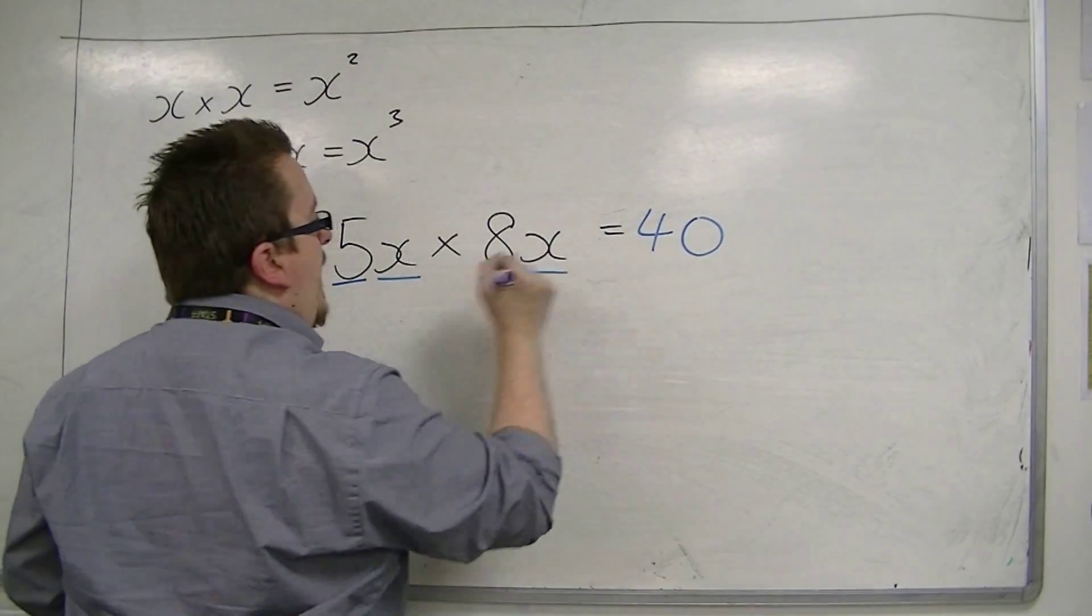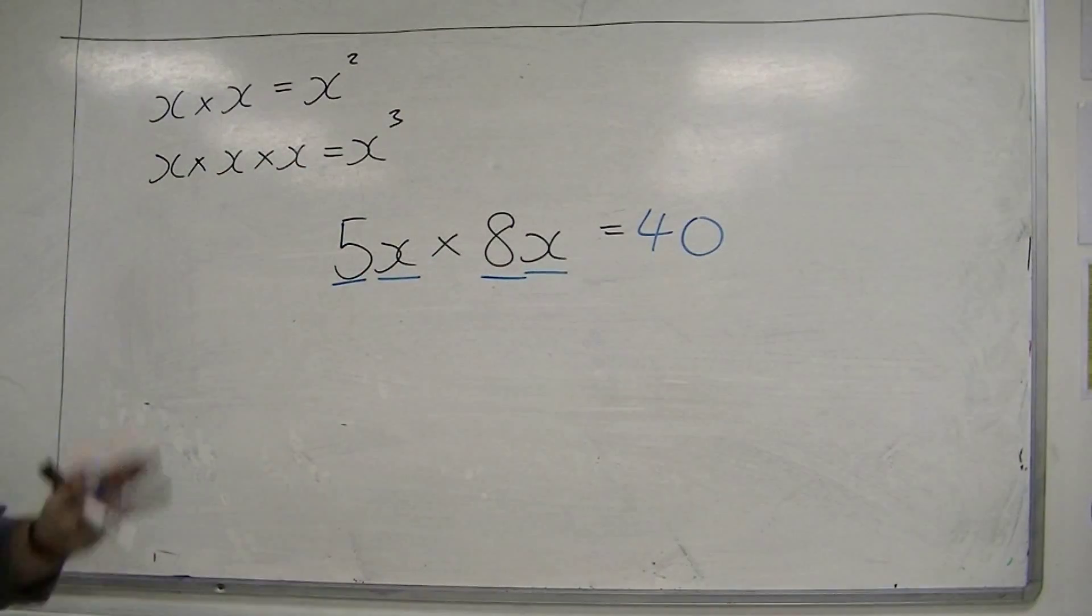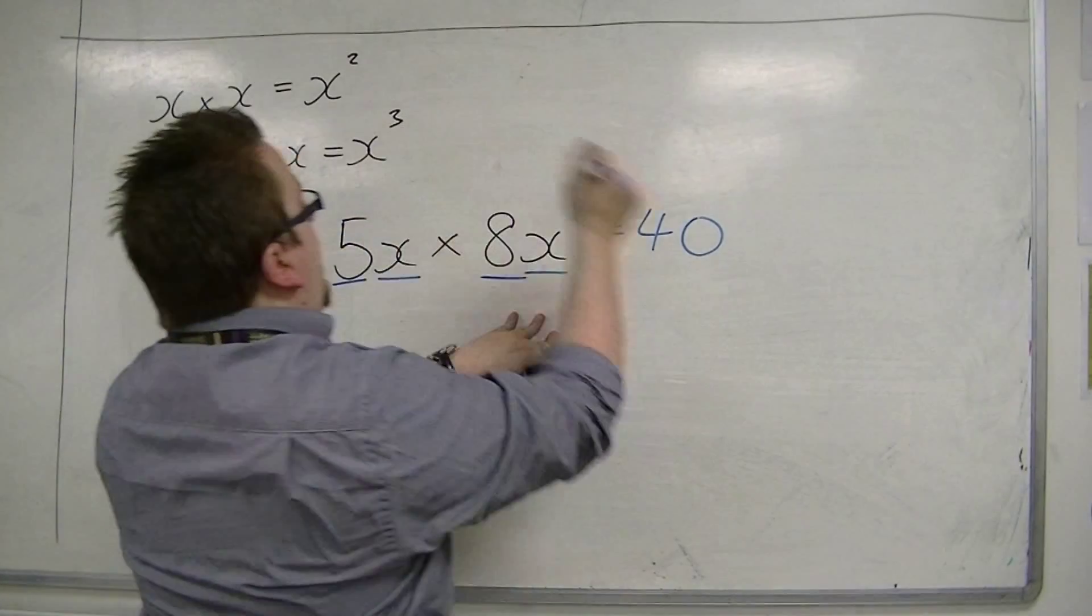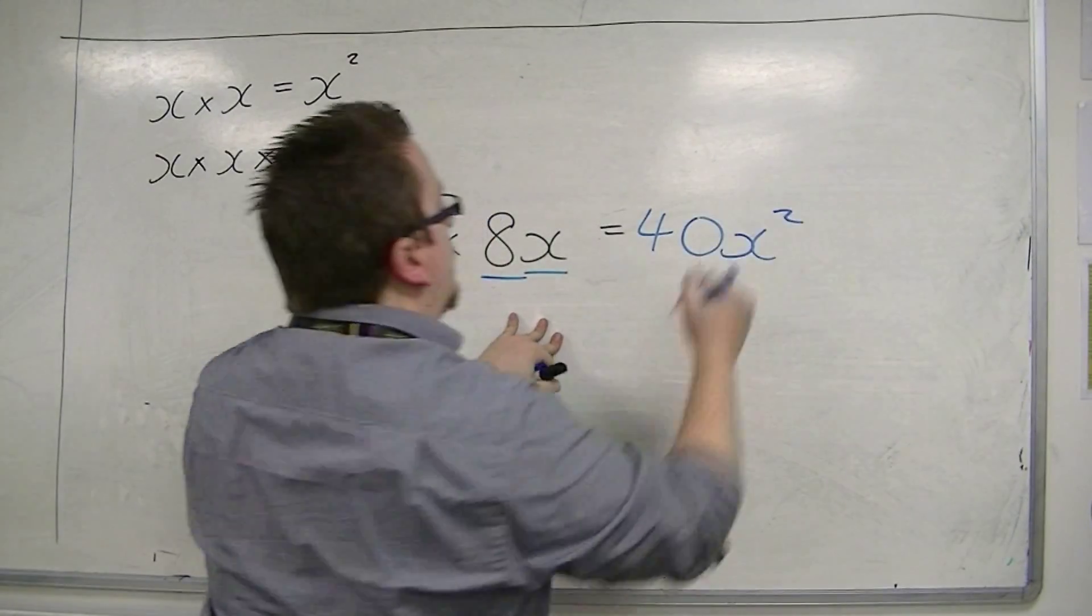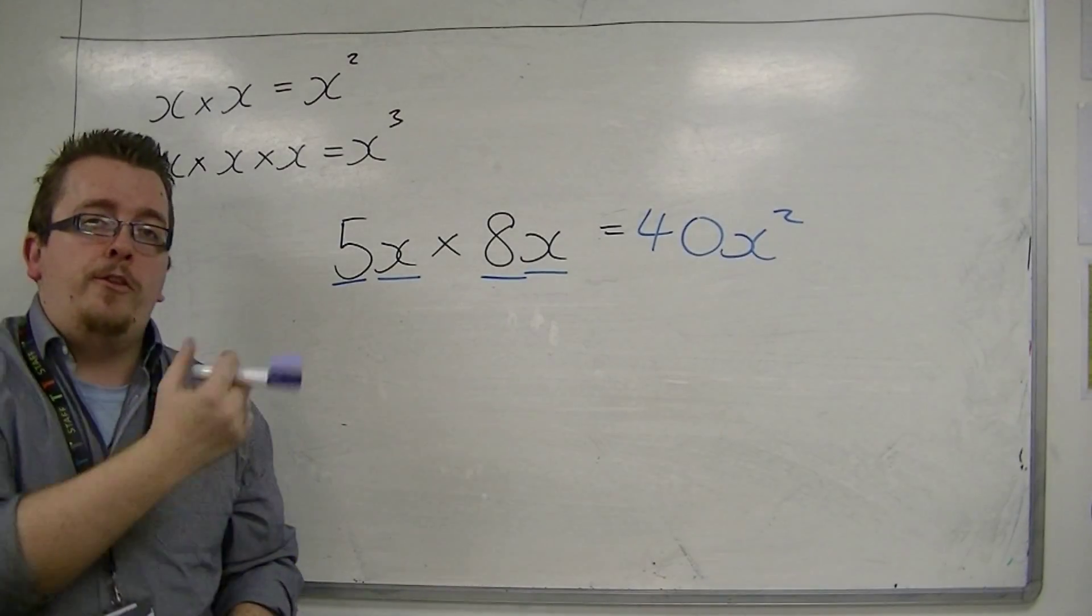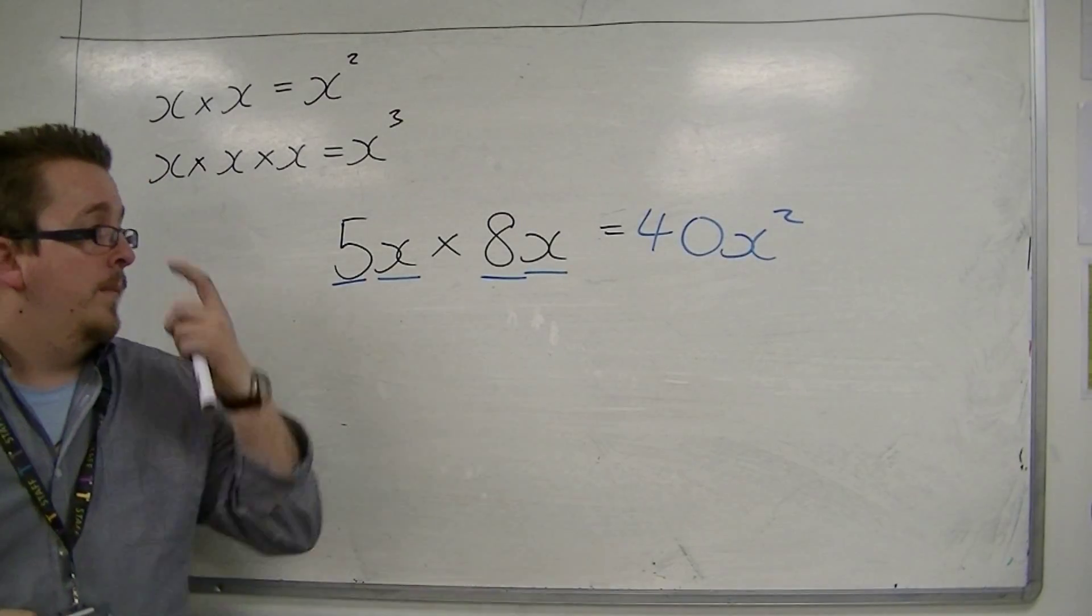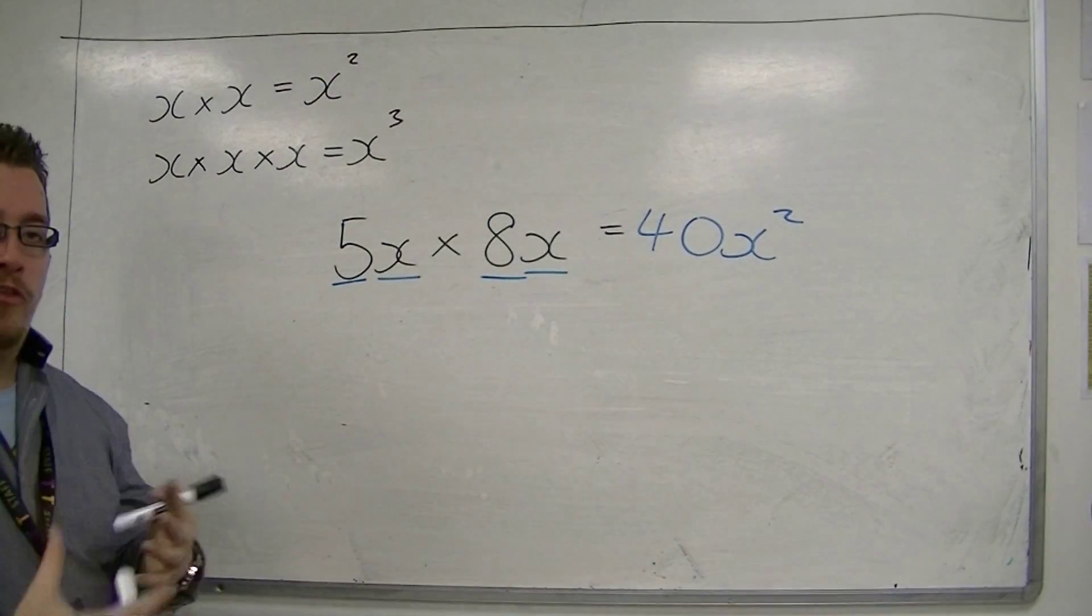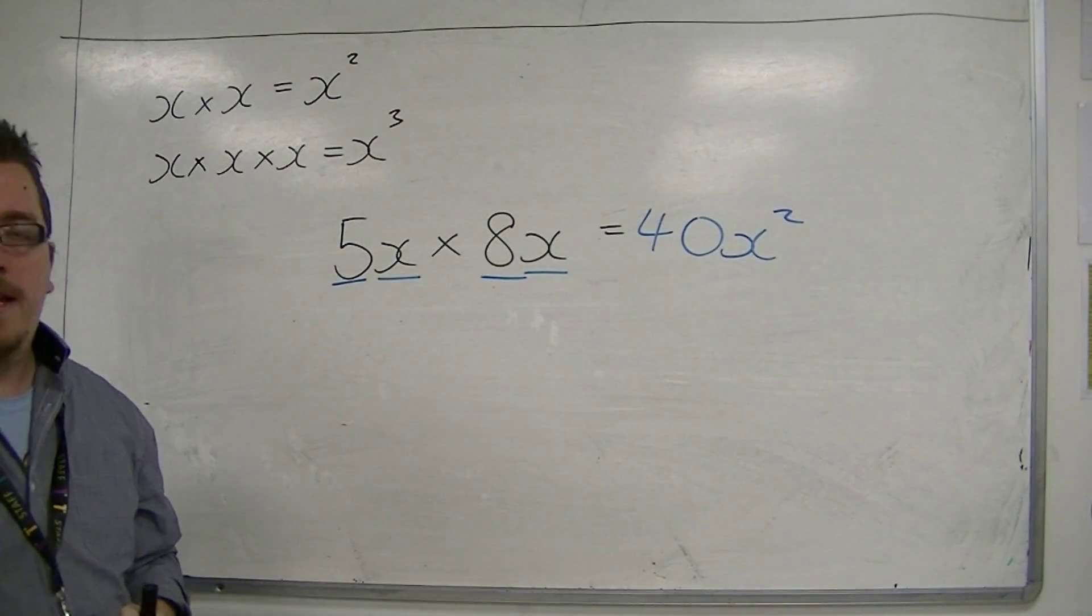And then we've got x times x. So deal with the letters second. x times x is x squared. So 5x times 8x can be written as 40x squared. And that is how we multiply expressions like this together.